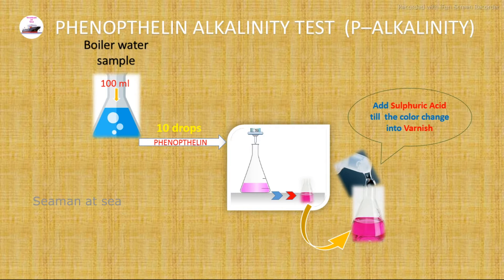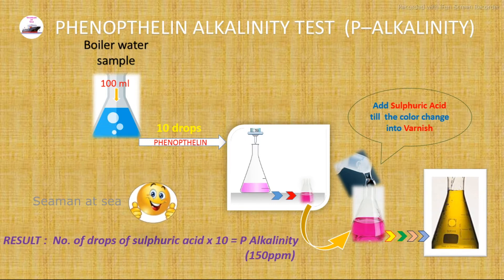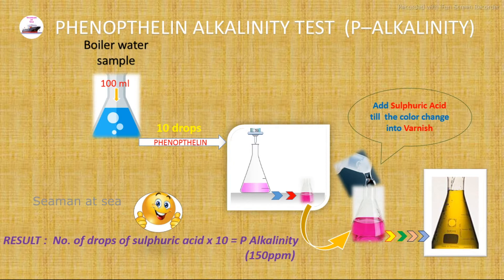The quantity of sulfuric acid added indicates the phenolphthalein alkalinity in the boiler water. The number of drops of sulfuric acid multiplied by 10 gives us the phenolphthalein alkalinity — 150 ppm is the acceptable value by every surveyor. This test is conducted to find out the hydroxide level in the boiler water.